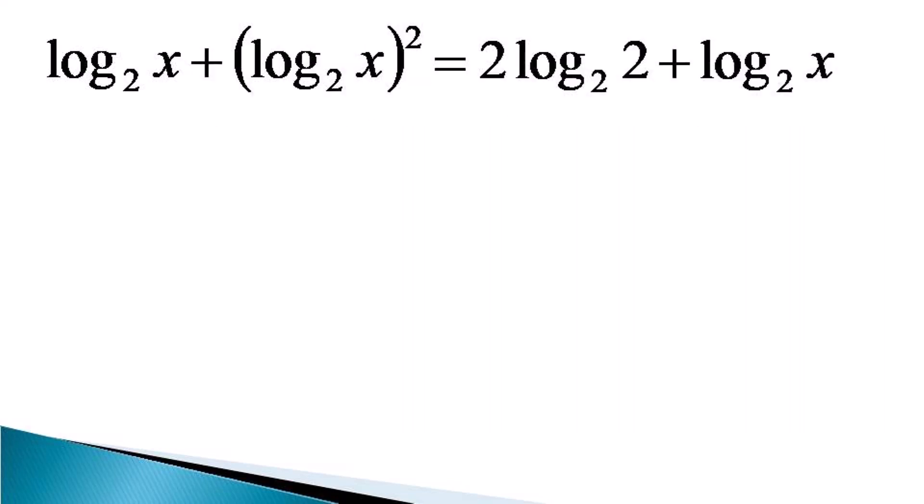In this equation, log x to the base 2 from both the sides gets cancelled giving us log x to the base 2 whole square is equal to 2 since log 2 to the base 2 is equal to unity.